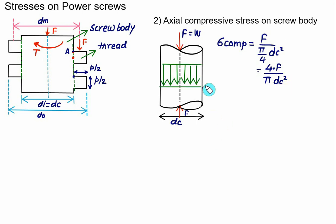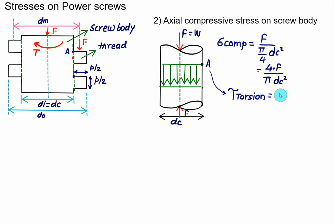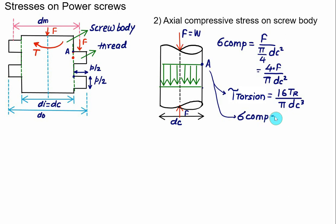The compressive stress is uniform over the entire screw body. At point A on the outer fiber, two stresses act simultaneously: shear stress due to torsion equal to 16T/(π × DC³), and compressive stress equal to 4F/(π × DC²). Both stresses act at this same point.